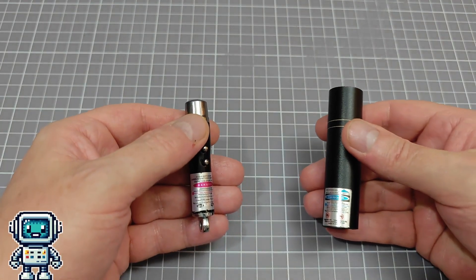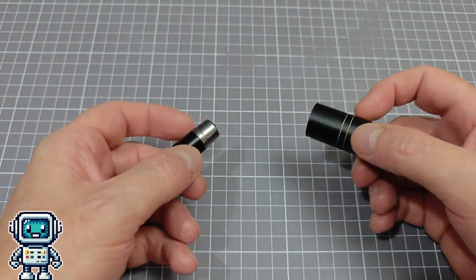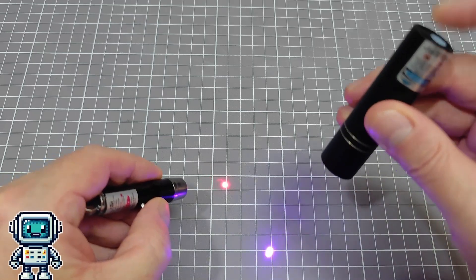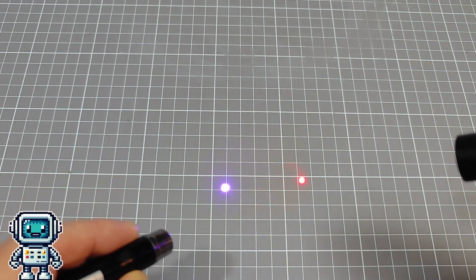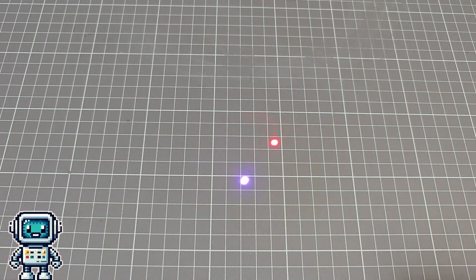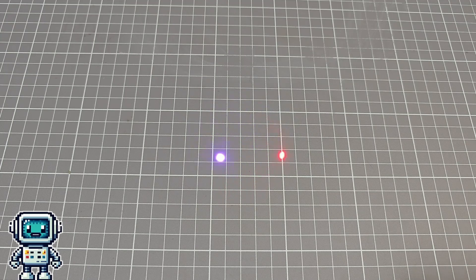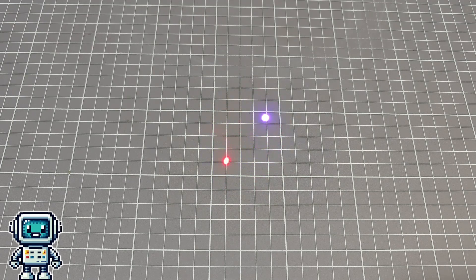For example, these two lasers have very different power output levels, but due to the response of the camera and the human eye, the red laser appears to have a similar brightness to the violet laser despite being 60 times lower power.